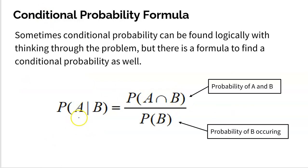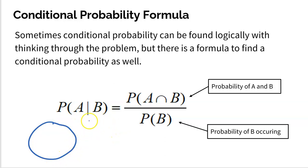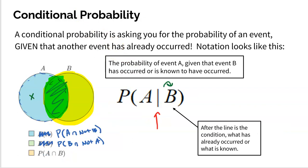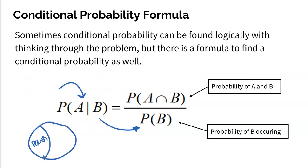The probability of A on the condition of B would be taking the probability of A and B as your numerator, and dividing it by the probability of B. The B is the denominator because we know we live in that circle — that's the condition. Then we ask: what fraction of that circle is also A? That section is A and B. So going back to the Venn diagram: the denominator is the entire B circle, and the numerator is the overlap A and B — the portion of B that is also A.